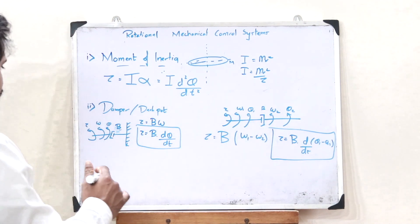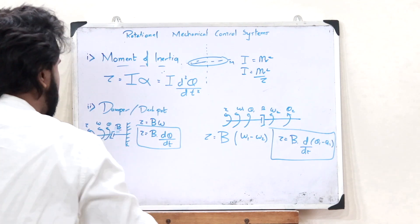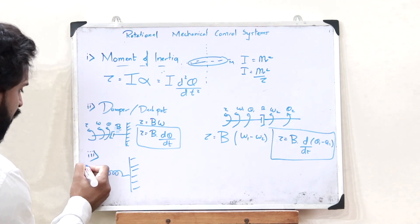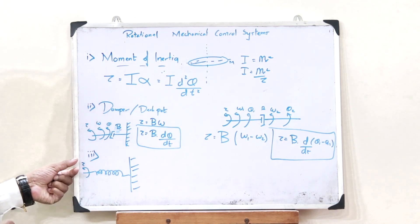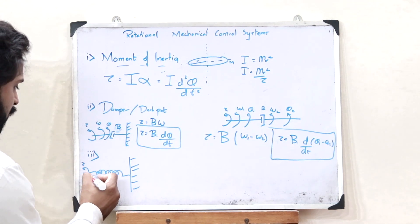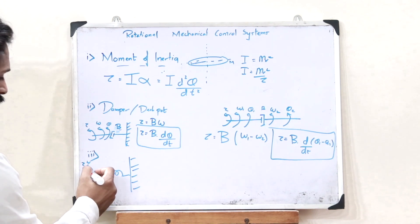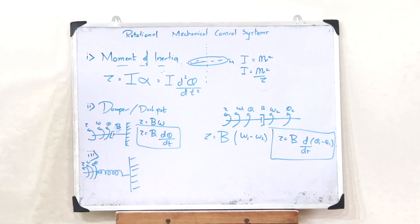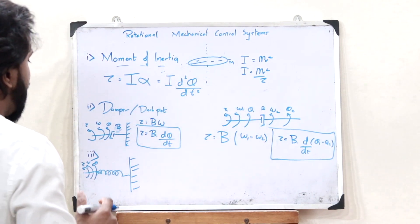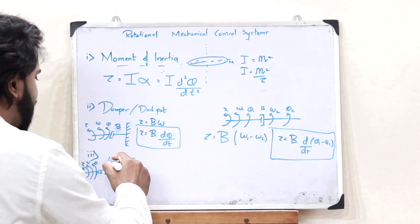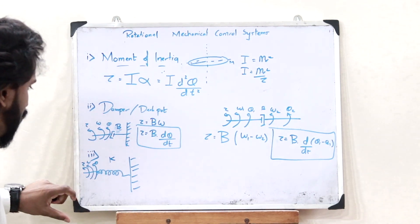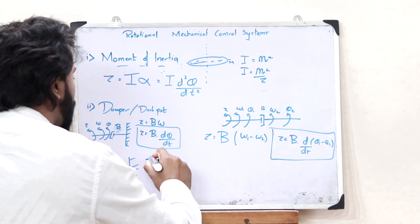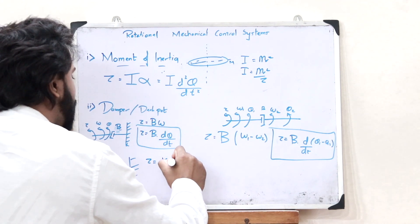Now let us look at the case of a particular spring attached to a wall. When we apply a particular rotating force, the spring rotates with angular velocity ω and undergoes angular displacement θ. If the spring constant is K, then the restoring torque developed in the spring is given as τ = K · θ.